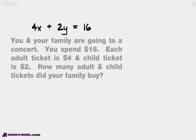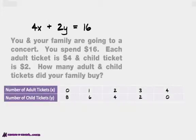Well, how many can you possibly buy? Well, let's make a table. Let's think about it this way. If we had zero adult tickets, that would give us eight child tickets. One adult ticket, six kid tickets. Two adult, four kids.